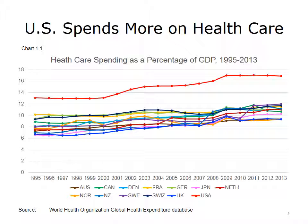The other nations represented in this report are characterized as high-income countries: Australia, Canada, Denmark, France, Germany, Japan, Netherlands, New Zealand, Norway, Sweden, Switzerland, and the United Kingdom. Compared to other countries where people have a standard of living similar to that of the U.S., the U.S. spends much more on health care.